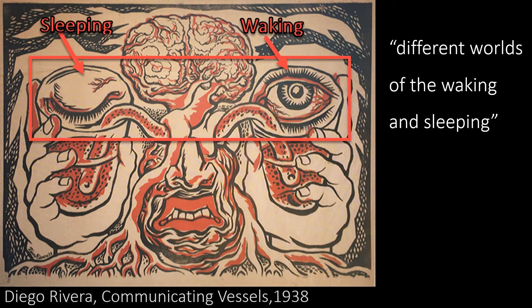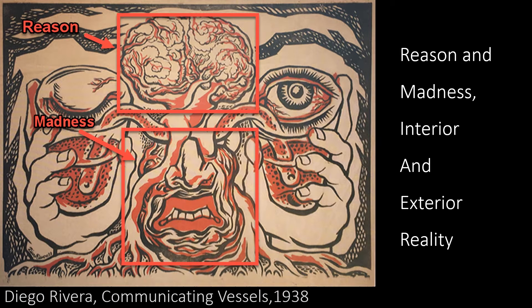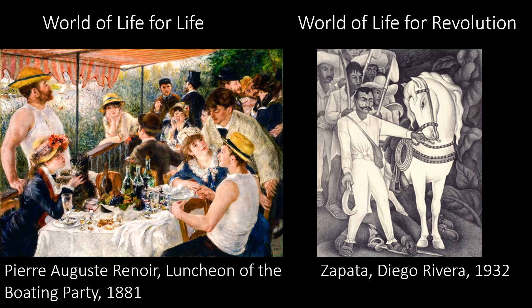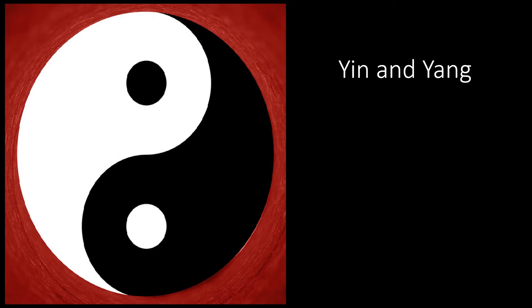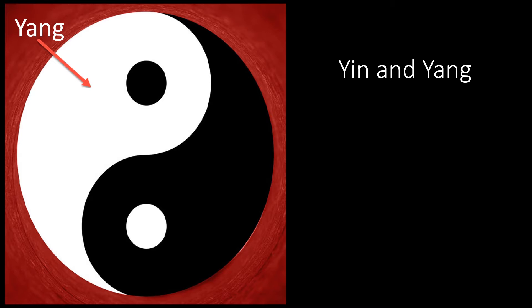In his essay, Breton said he hoped Surrealism could be a connection between worlds that were separated for far too long, like the worlds of waking and sleeping, reason and madness, interior and exterior reality, and life for life and life for revolution. There seems to be similarities with the Chinese concept of yin and yang, where there's an importance in having a balance of opposites, like yin in black and yang in white.